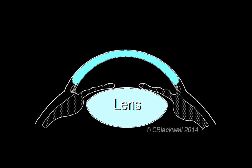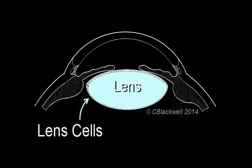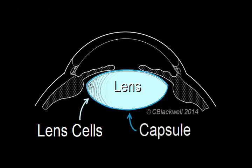Consider that the lens is a living structure, with cells that continue dividing slowly over your lifetime. Cell division happens around the equator of the lens, with the cells migrating toward the center of the lens. The lens is encased in an envelope, or capsule, so that the number of cells packed in this space increases gradually but continuously over your lifetime.